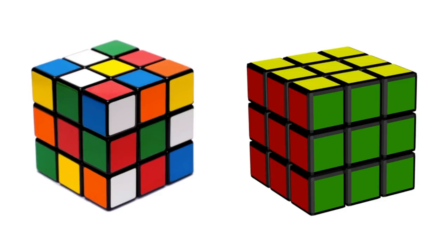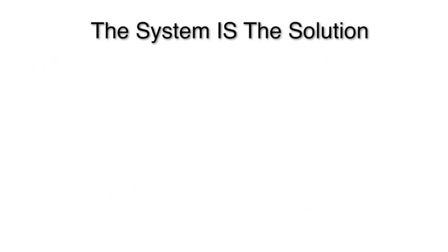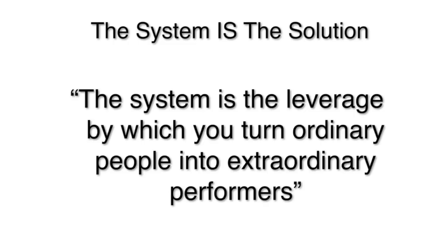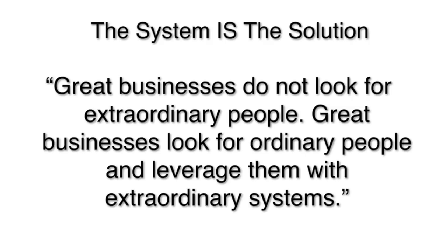Marketing in general is pretty much like creating and solving a Rubik's Cube — figuring out how to match up the sides so that you have a completed process. Some key phrases I learned: the system is the solution. The system is the leverage by which you turn ordinary people into extraordinary performers. Great businesses do not look for extraordinary people — they look for ordinary people and leverage them with extraordinary systems.